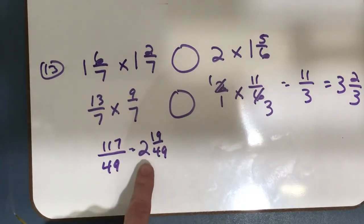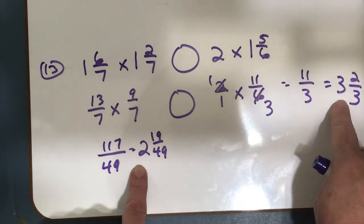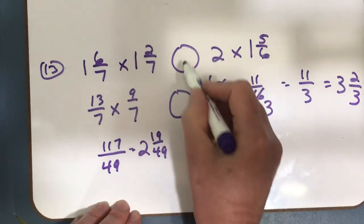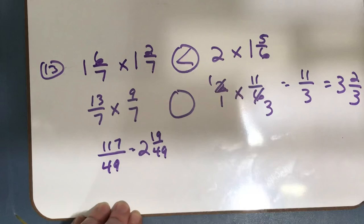So I just have to look at my whole numbers. I have a 2 and I have a 3. 3 is bigger than 2, so my sign is going to be greater than.